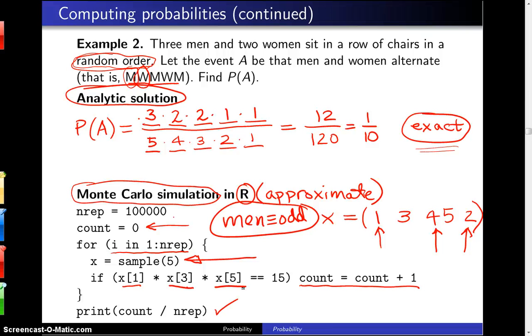And that is our estimate for the probability that men and women alternate. And I'd encourage you to key this into R and run it four, five, six times. And notice how the output will jump around the theoretical value, which is 1 tenth, which we discovered by the analytic solution there.